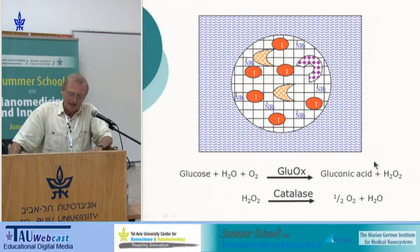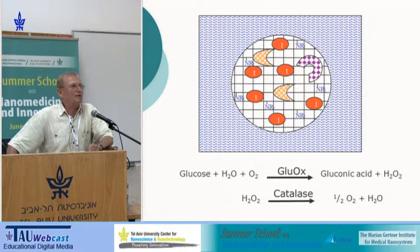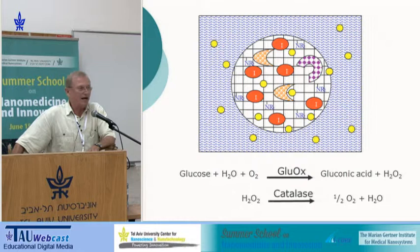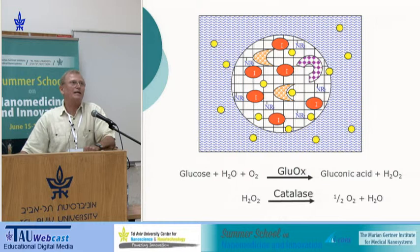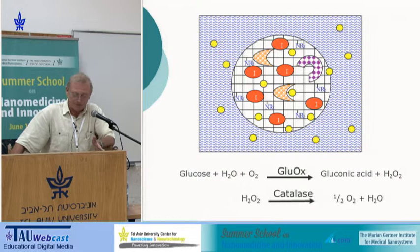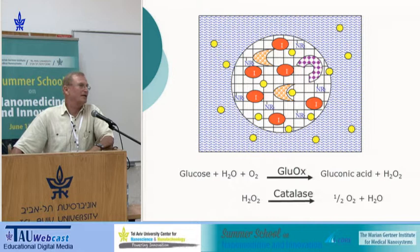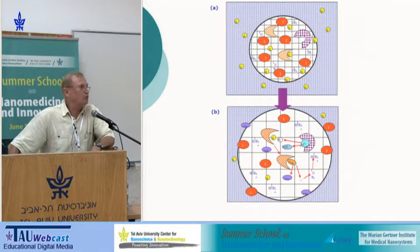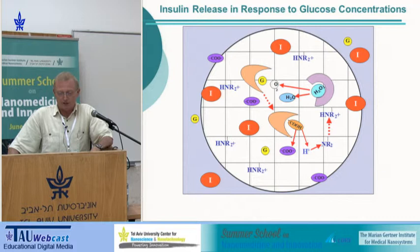We incorporate insulin — a small protein of 6,000 molecular weight — into this polymeric matrix. Glucose, being a small molecule with molecular weight of 180, can penetrate the polymer. Once glucose penetrates, it reacts with glucose oxidase, gets converted to gluconic acid, the pH drops, the polymer swells, and we have a release of insulin in response to glucose concentration.